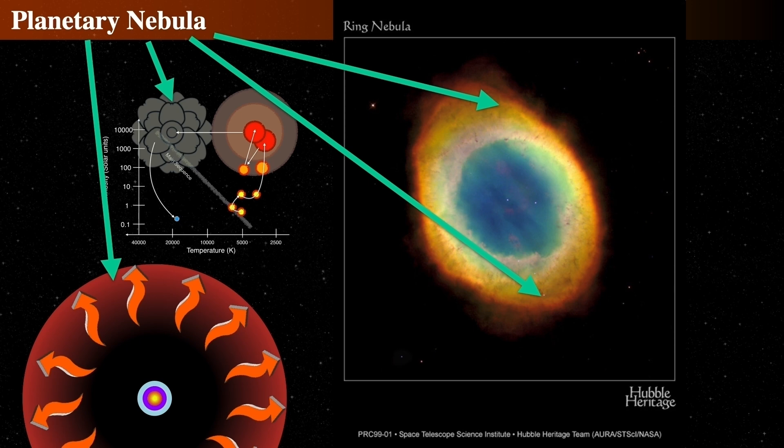But the most definite use comes from the French astronomer Antoine Darquier de Pellepoix in January of 1779. On a cold night, he described the Ring Nebula as being planet-like.